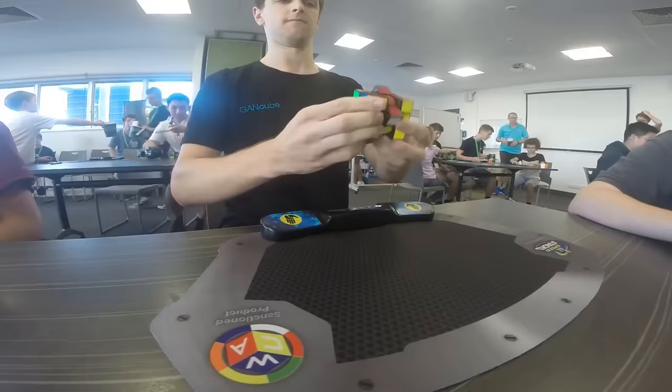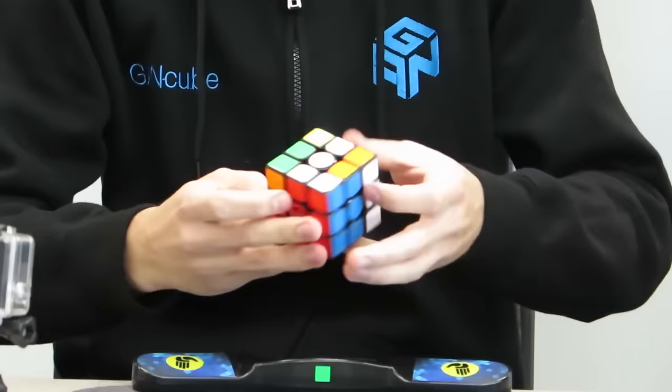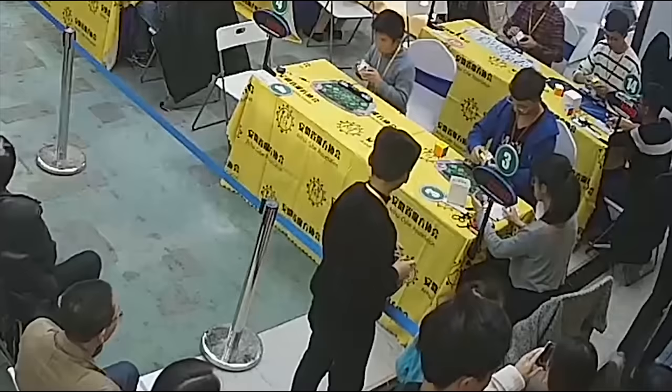Zemdegs currently holds the average solve record of 5.69 seconds. But single solve times still matter. And Zemdegs used to hold that record too with a time of 4.22 seconds. That was until Chinese speedcuber Yusheng Du demolished it last fall with a time of 3.47 seconds.